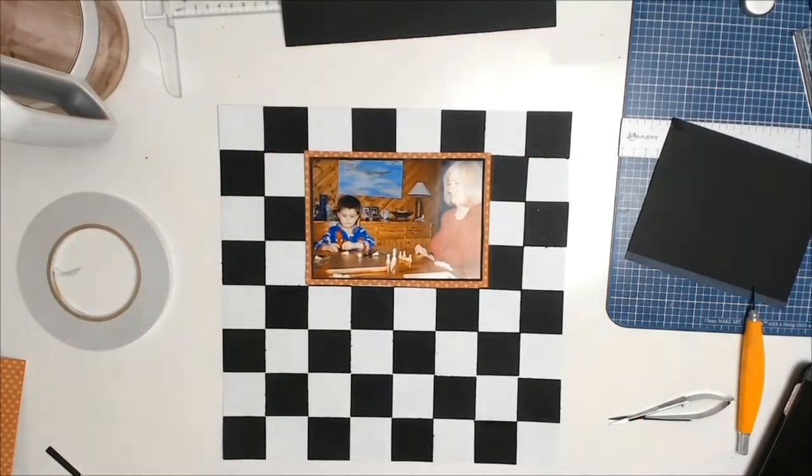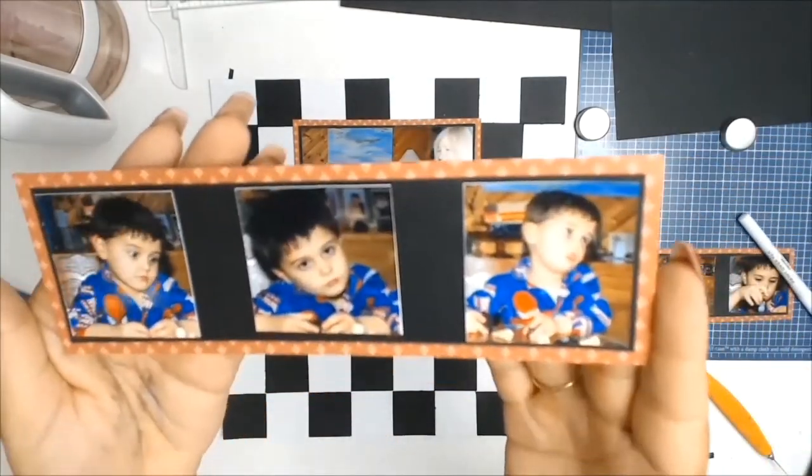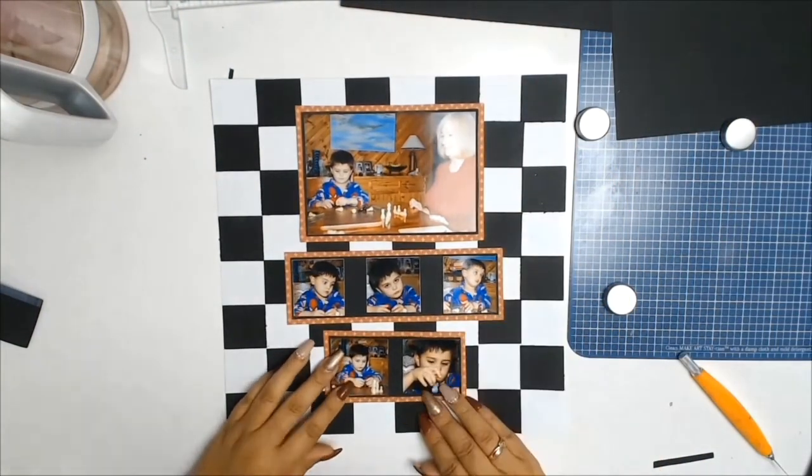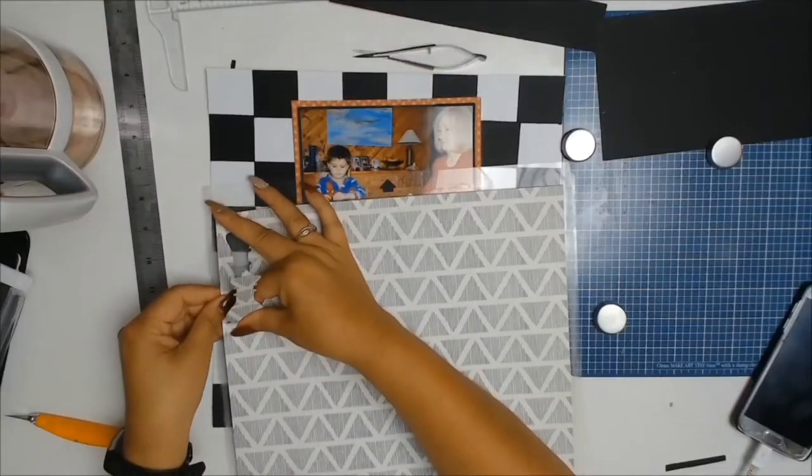This process video is going to be nice and short as there really wasn't a lot of work that went into this layout. But the most time consuming aspect, as I said earlier, was making the chess board. I love how that red matte helps the photos pop from that very busy background.